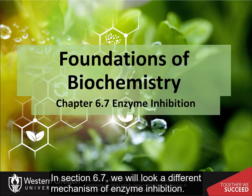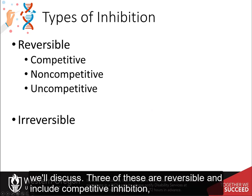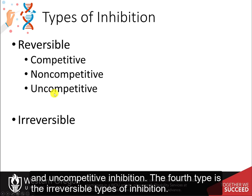In section 6.7, we will look at different mechanisms of enzyme inhibition. There are four major types of inhibition that we'll discuss. Three of these are reversible and include competitive inhibition, non-competitive inhibition, and uncompetitive inhibition. The fourth type is irreversible inhibition.